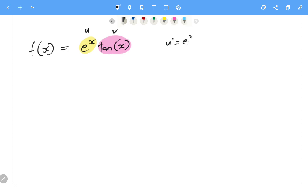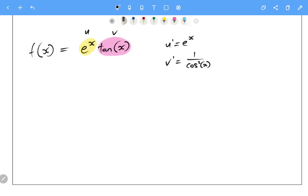now u dash is just e to the x by the exponential rule, and v dash is going to be 1 on cos squared of x using our original rule there. So the f dash of x is going to be the derivative of u times v plus the derivative of v times u.